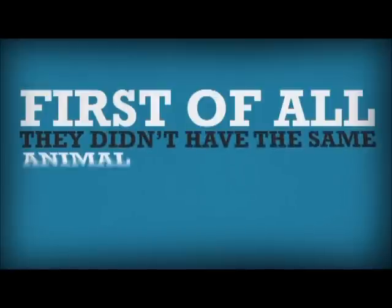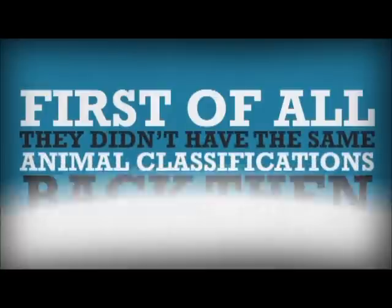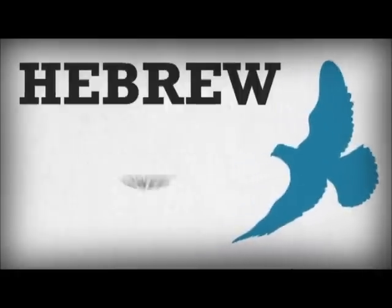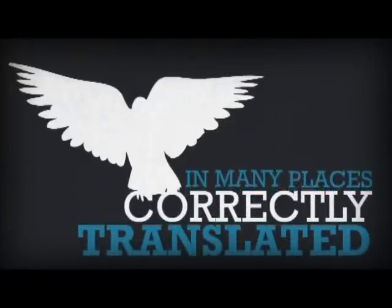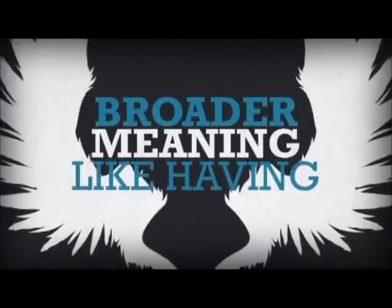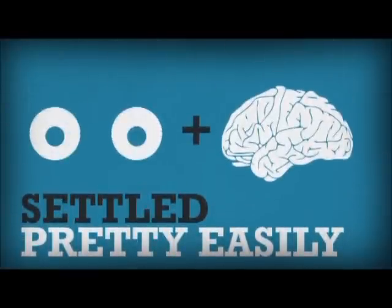Come on. First of all, they didn't have the same animal classifications back then, and the original Hebrew word translated bird here is alf, or however you pronounce that. And although correctly translated bird in many places, it also has a broader meaning like having wings or wing creature, which would, of course, include bats. This is all settled pretty easily with a little looking and thinking, I'd say.